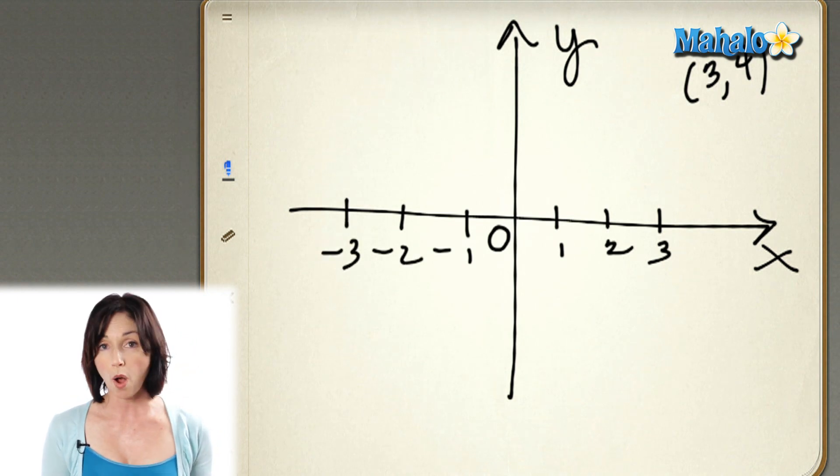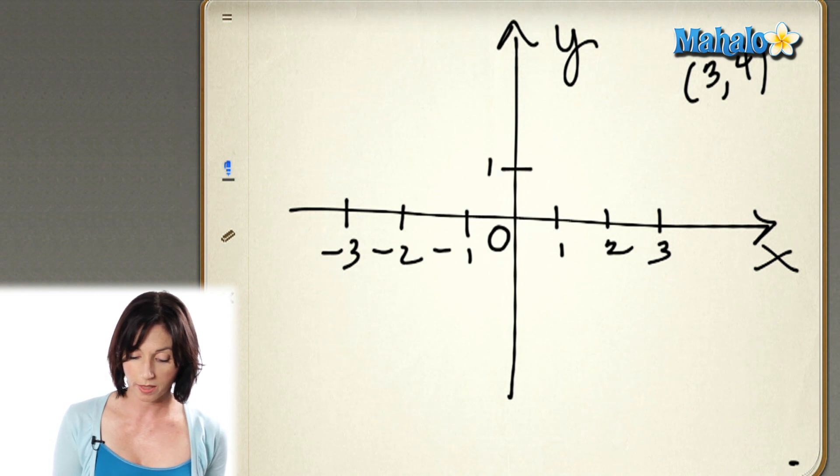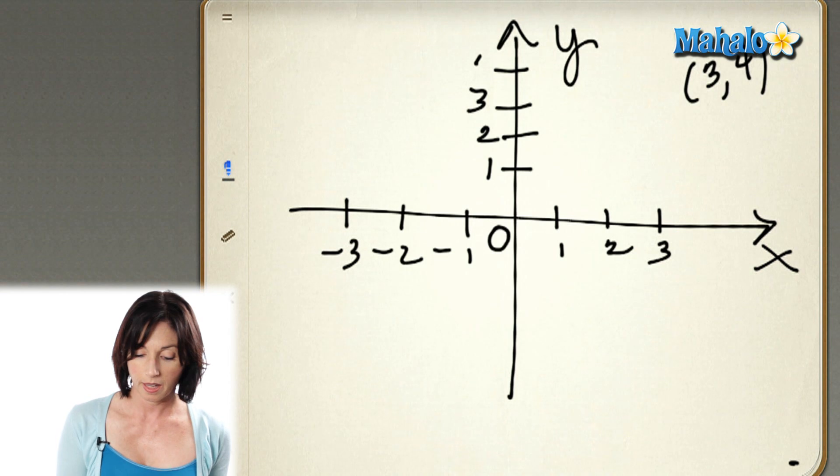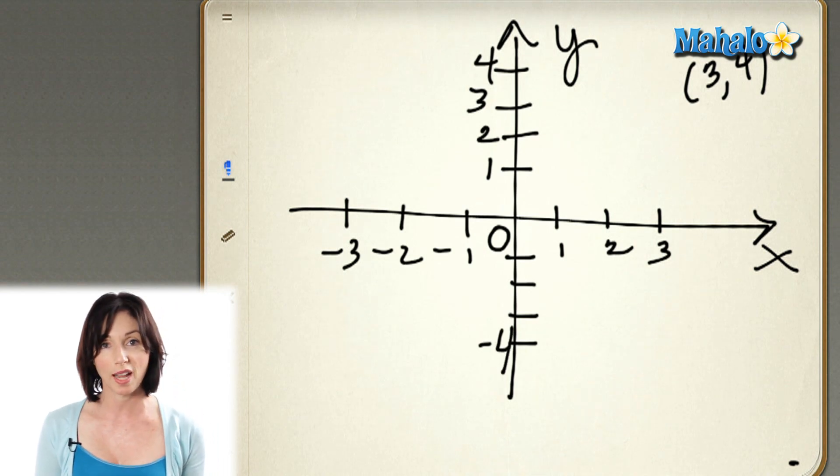Now, for the y-axis, up is positive, so we would have positive numbers here. And down is negative in y. So I'm just going to label the bottom one. These are negative values in y going down.